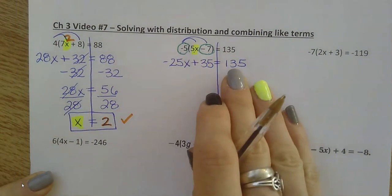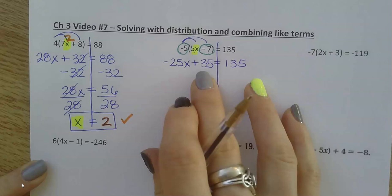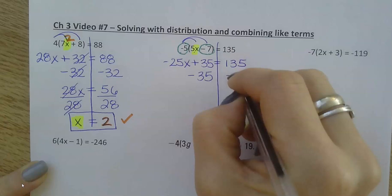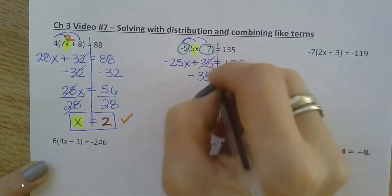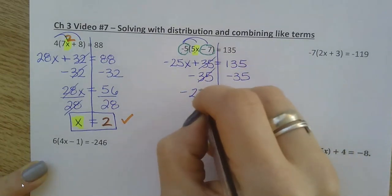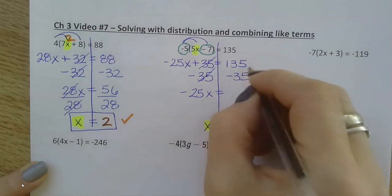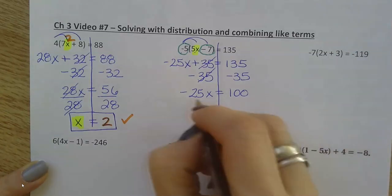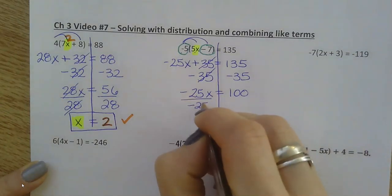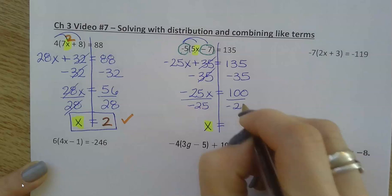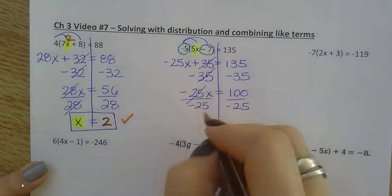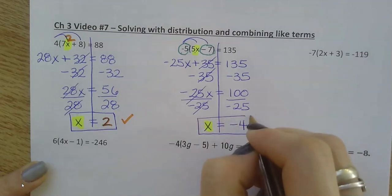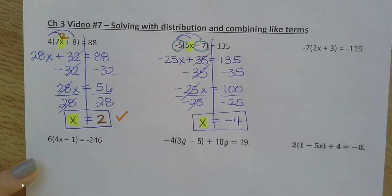Bring everything else down. All right. No like terms to combine. I'm ready to just start canceling things out to get x by itself. So cancel adding and subtracting first. Cross it out. Carefully bring everything down. And 135 minus 35 gives me 100. Final step. Cancel out multiplying and dividing with the inverse operation. Cross it out. Bring everything down. And I got negative 4.